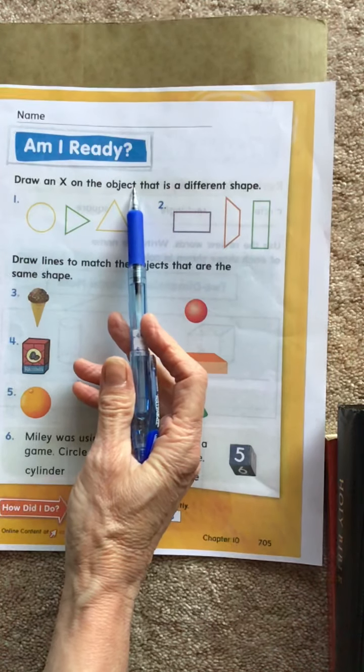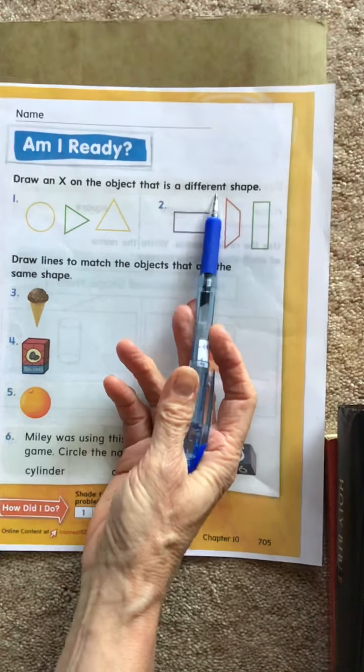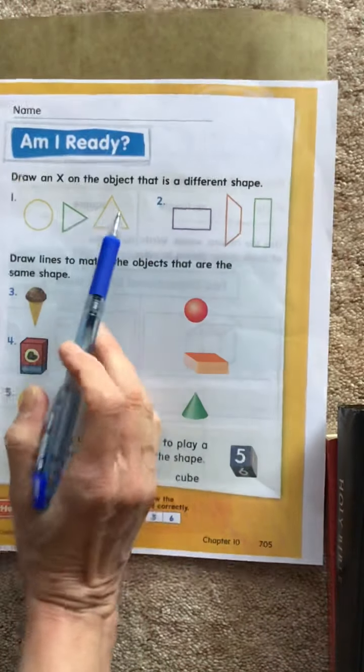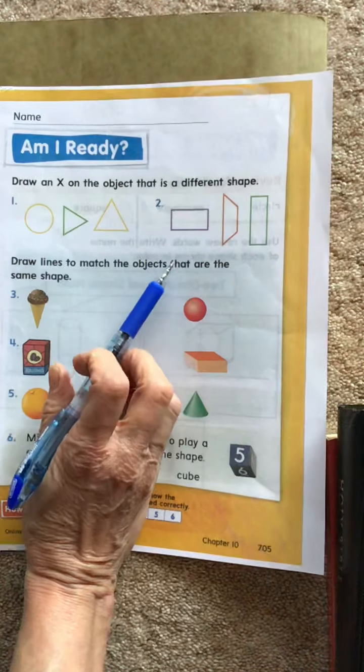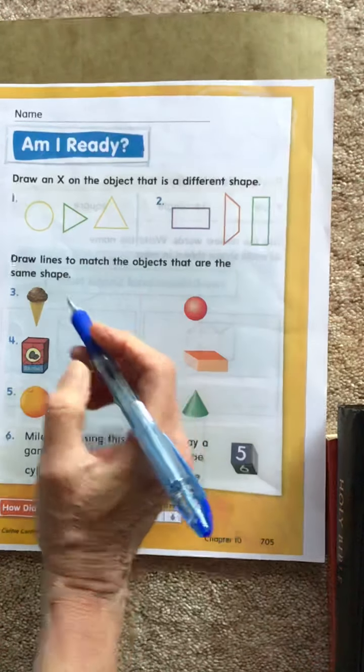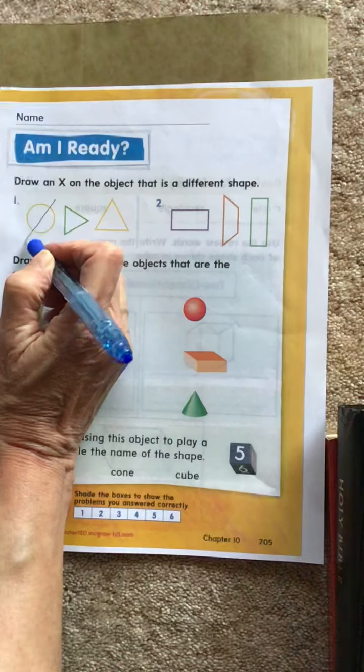it says draw an X to the object that is a different shape, so you've got a circle, a triangle, a triangle, so which one's different? Okay, make an X on it.